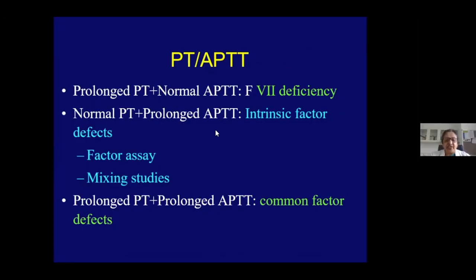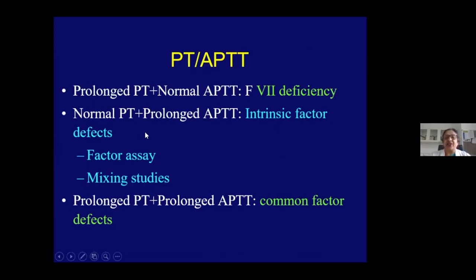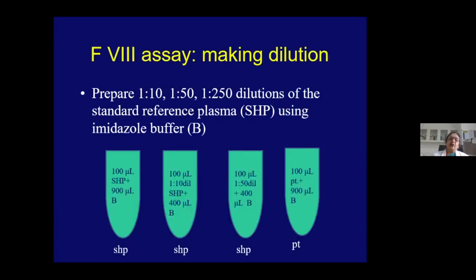Interpreting PT and APTT results: an isolated prolonged PT with normal APTT in an inherited bleeding disorder suggests factor 7 deficiency. A normal PT with prolonged APTT points to intrinsic factor defects. If both PT and APTT are prolonged, you think of inherited common pathway factor defects. Acquired conditions can also cause these patterns.